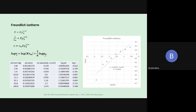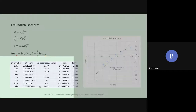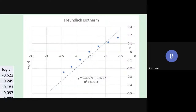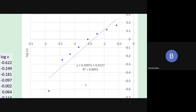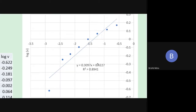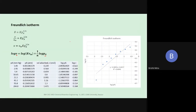Plotting log V versus log P_A, we can see the points definitely do not form a straight line — three or four points look linear, but there is curvature in other parts. Fitting a straight line through all data points gives an R² of only 0.8941, much lower than 1. Looking at this figure alone, we can conclude this is not a good fit, so the hydrogen-on-copper data does not fit the Freundlich isotherm well.